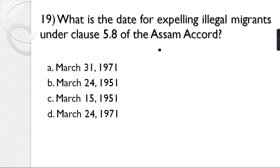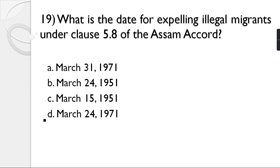Question number 19: What is the cut-off date for expelling illegal migrants under Clause 5.8 of the Assam Accord? Options: March 31st 1971, March 24 1951, March 15 1951, March 24 1971. The correct answer is option D — March 24, 1971.